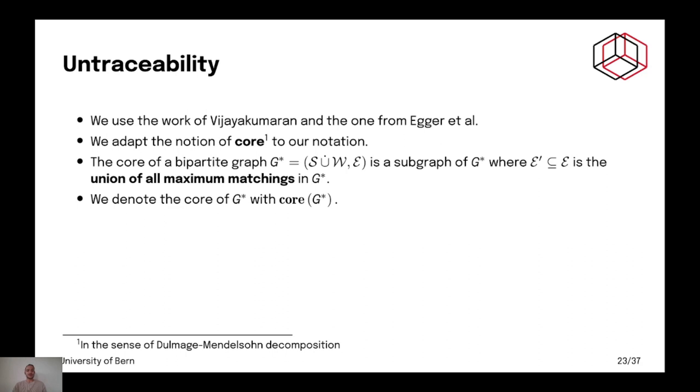So, like I said, we can use previous work that treats the anonymization with a bipartite graph. This is the work of Vijay Akamaran and the one of Eger et al. And we adapt the notion of core. Core is the union of all maximum matchings. And we use it in our model.